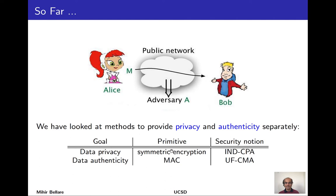For data privacy our primitive was symmetric encryption. Example schemes were modes of operation of block ciphers like cipher block chaining, counter mode, and so forth. The security target was the stringent IND-CPA, and we showed certain schemes met it. For data authenticity we provided a primitive called a MAC, with a way to attach tags to communicated information to vouch for their authenticity. We had a security goal — UF-CMA — and many secure tagging methods like CMAC and HMAC.